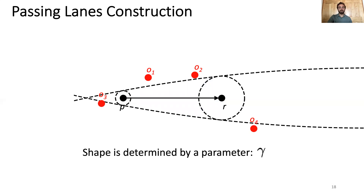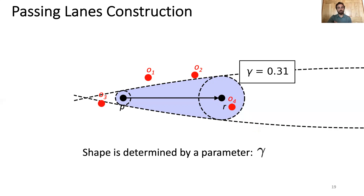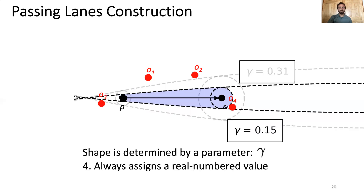So we add surrounding circles around P and R, so that for a passing lane to have this size, there can't be opponents within these circles. Our third requirement is this consideration of the surrounding area around P and R. We use tangent arcs to connect the two circles, and the entire shape is determined by a single parameter gamma. We take the union of the circles and the arcs as the passing lane, shown here as the shaded region. The lane expands until the edge contacts the most threatening opponent, and the corresponding gamma value is then the passing lane value. Our fourth requirement is that our algorithm should always assign a real numbered value.